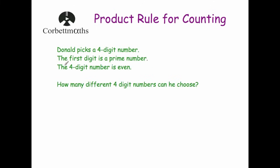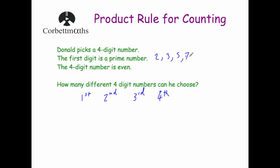Let's look at our first example. Donald picks a four-digit number. The first digit is a prime number and the four-digit number is even. How many different four-digit numbers can he choose? We look at each of the four digits in turn. The first digit must be a prime number — the single-digit primes are 2, 3, 5, and 7 — so there are four different options for the first digit.